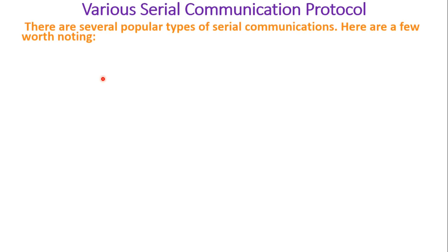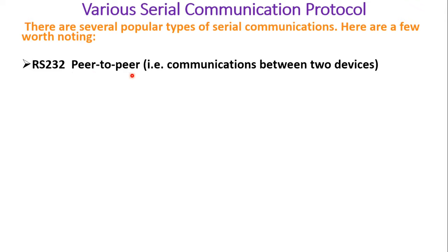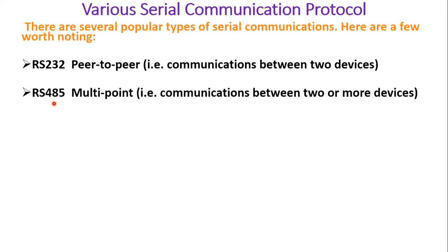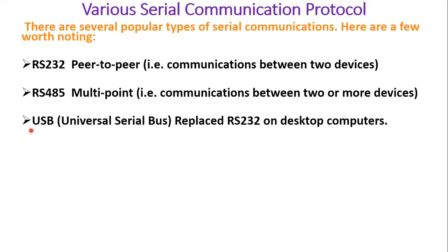Various serial communication protocols widely used today include: RS-232, a point-to-point communication protocol for transferring data between two points. RS-485 is an advanced version supporting multi-point communication — a master can send data to many peripheral slave devices. Then we have USB, Universal Serial Bus, found in modern laptops. RS-232 is the older version that has been replaced by USB in today's desktop computers.